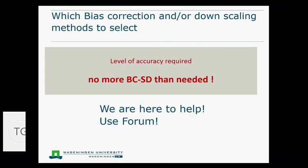I want to stress: don't do any more correction or downscaling than you need. Because with every new correction or downscaling, you also add uncertainty. Look really at the level of accuracy that you require and that you can get, and look at other sources of uncertainty as well.